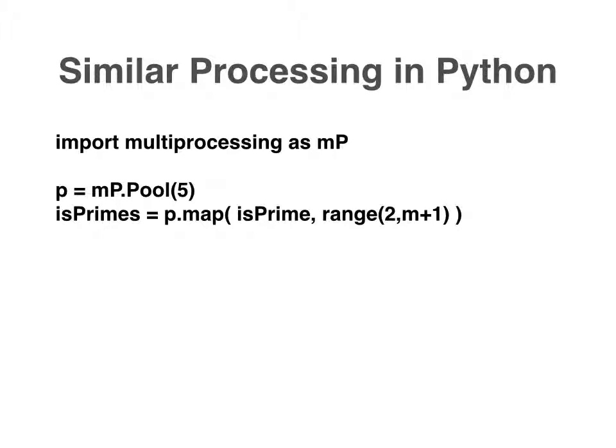Map accepts two arguments. To explain these arguments, I'm going to use the analogy of a loop. The first argument is the name of the function that would be called inside each iteration of the loop. The second argument is a list of inputs that would be supplied to that function. So here I'm calling is_prime on the list between 2 and m. What map does is it breaks up the list argument into several different chunks — in this case, five different chunks — and it processes each of those chunks in a separate processing thread.